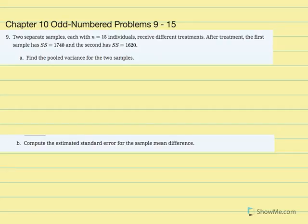Chapter 10 odd number problems, 9 through 15. Number 9: two separate samples, each with n equal to 15 individuals, receive different treatments. After treatment, the first sample has sum of squared deviations equal to 1740, and the second has sum of squared deviations equal to 1620. Find the pooled variance for the two samples.